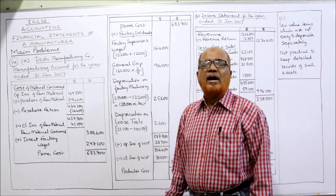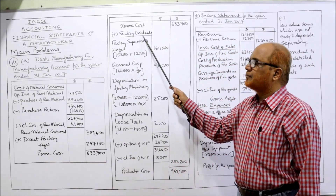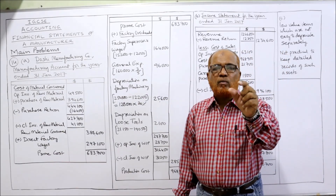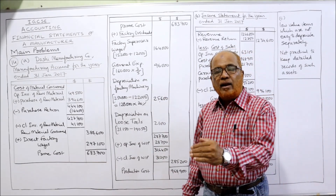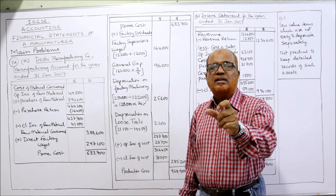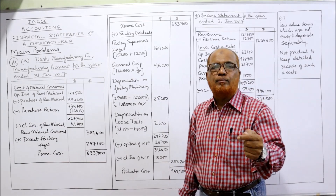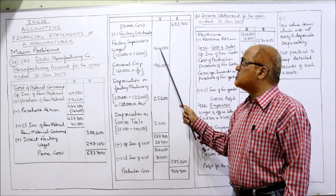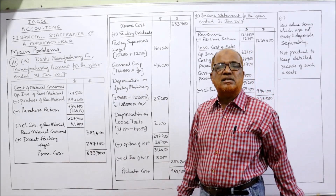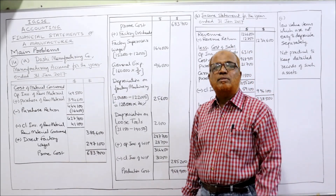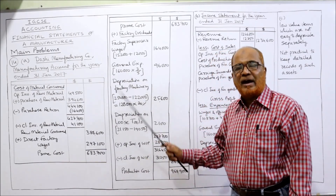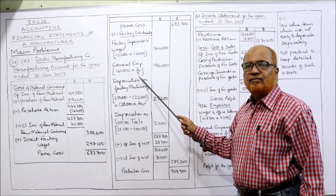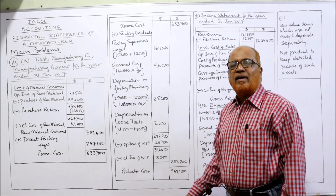To prime cost we add factory overheads or manufacturing overheads. First, factory supervisor's wages: from the trial balance, supervisor's wages paid are 1,52,000. From additional information, supervisor's salary accrued is 12,000 — total supervisor's wages 1,64,000. General expenses are 1,60,000 in the trial balance, and three-fifths should be taken in factory overhead: 1,60,000 × 3/5 = 96,000.